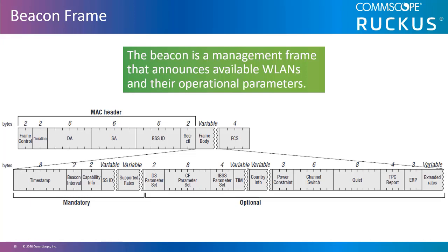Beacon frames are transmitted periodically to allow stations to locate and identify a basic service set and to display the basic service set parameters. This frame advertises what is available on that access point and advises stations on how the basic service set operates. Beacon frames include sections containing important information such as beacon interval, used to define the time between beacon frame transmissions, and the service set identifier.